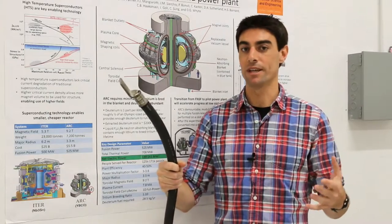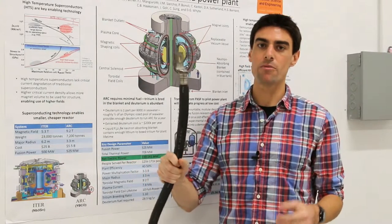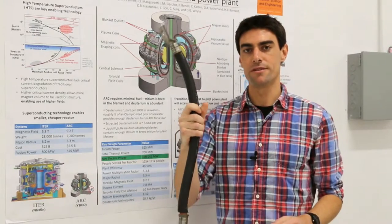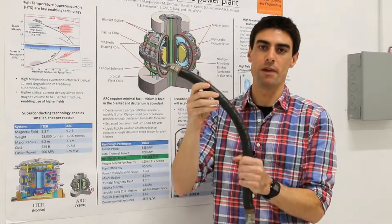But the problem with using copper is that copper has a lot of power losses inside these conductors that are used to make the magnets.